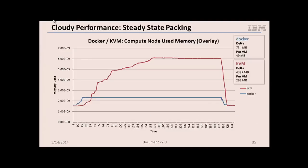Here's the memory — red is KVM, blue is Docker. About 49 megabytes per VM with Docker versus about 292 with KVM. Remember, I said these things are lightweight — you just need the application and its dependencies, so it's a smaller image and a smaller runtime. And this is proving it.